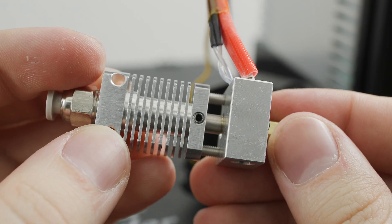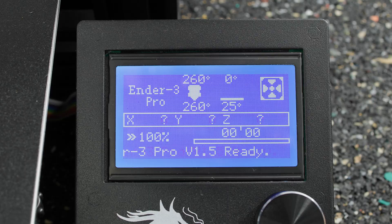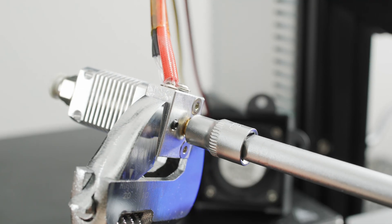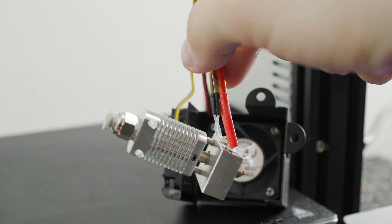If your hotend is assembled, heat it up to 260 degrees. Once heated, tighten the nozzle against the heat brake. After tightening the nozzle, let the hotend cool down again.